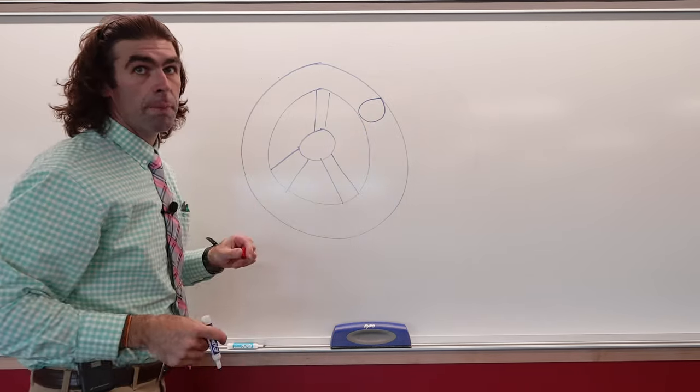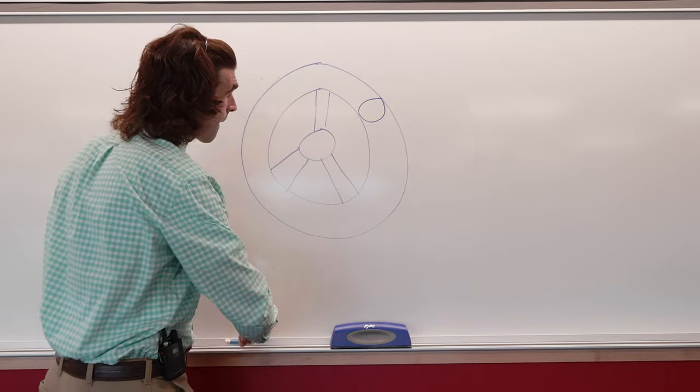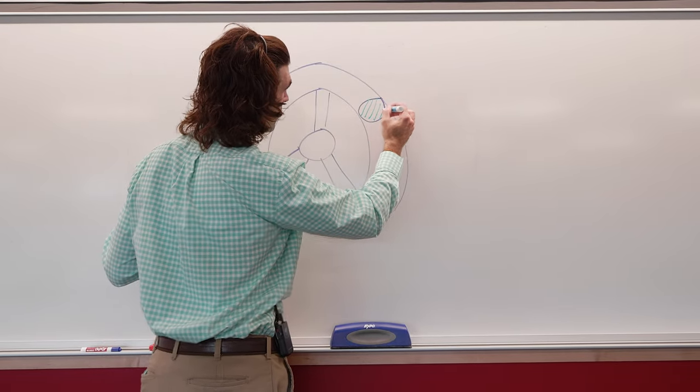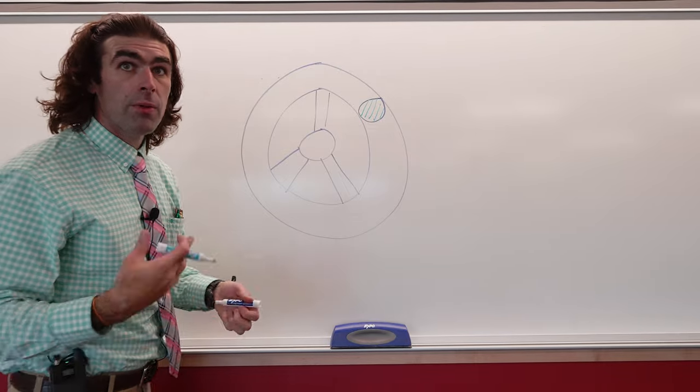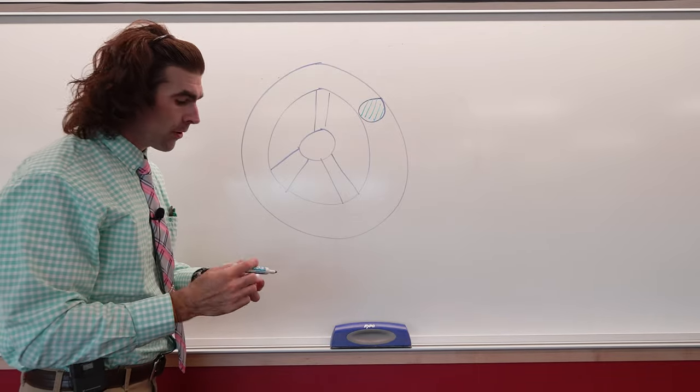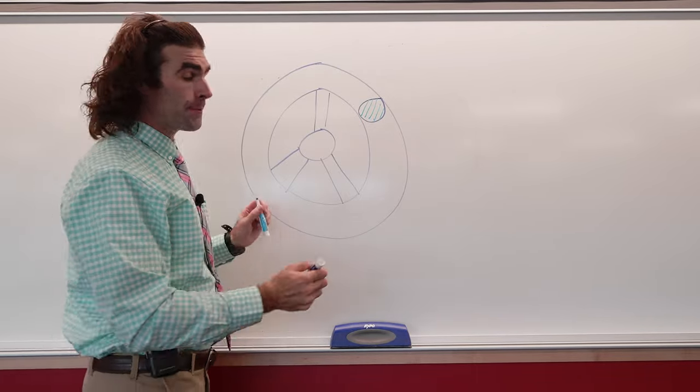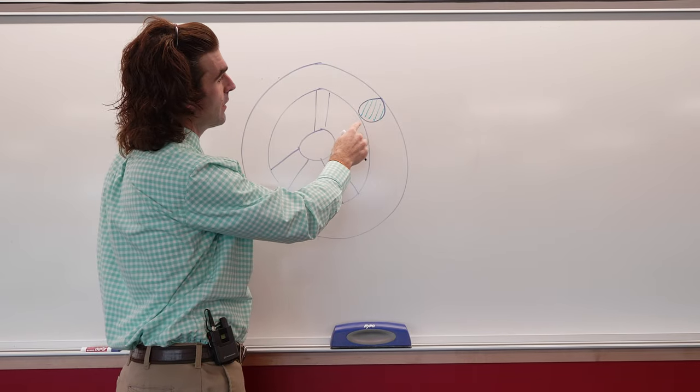What a revolved section does—you're just going to draw the section right there, add our section lines, and show it right inside of the part. Now there's a couple ways to do this.